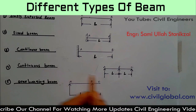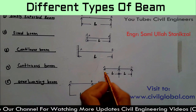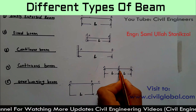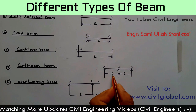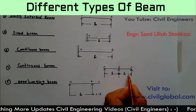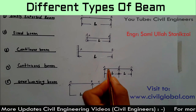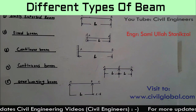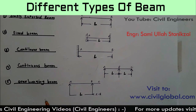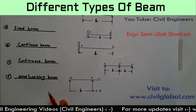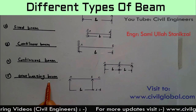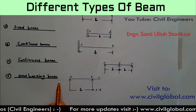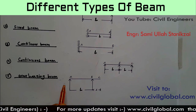The fourth one we have is the continuous beam. A beam which has more than two supports is called a continuous beam. This is the first support, second support, and third support — labeled A, B, and C — representing the length of the beam.